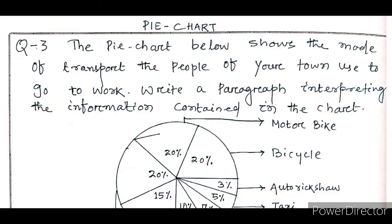The question is now on the screen. This is the third number question. The pie chart below shows the mode of transport the people of your town used to go to work. Write a paragraph interpreting the information contained in the chart. The question asks us to describe which modes of transport the people of your town use to go to work.